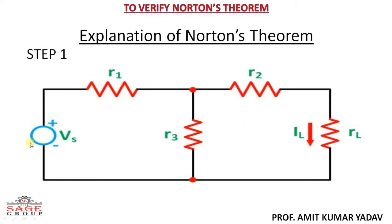Let us understand Norton's theorem with an example. In this circuit I have taken a single voltage source, a load RL, and both are connected with some elements R1, R2, and R. In this circuit, IL is the load current across RL. By using Norton's theorem, we first calculate the short-circuit current, and second, we calculate the internal resistance across the load.